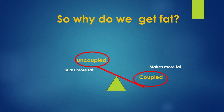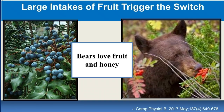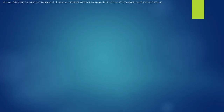So why do we get fat if we're in homeostasis? What is the switch that disrupts the coupled-uncoupled balance? Here's a clue: bears love fruit and honey. Grizzly bears change their behavior in the fall — they're hungry, they forage for food, they double their food intake and gain 8 to 10 pounds a day, eating hundreds of pounds of berries and fruits. They gain weight, gain fat, and become insulin resistant. But they hibernate.